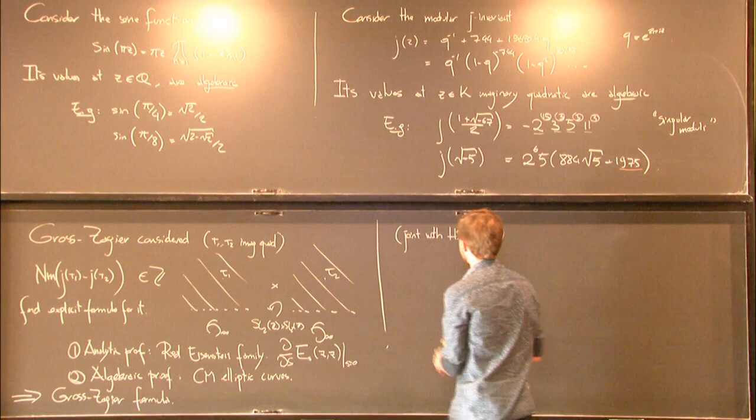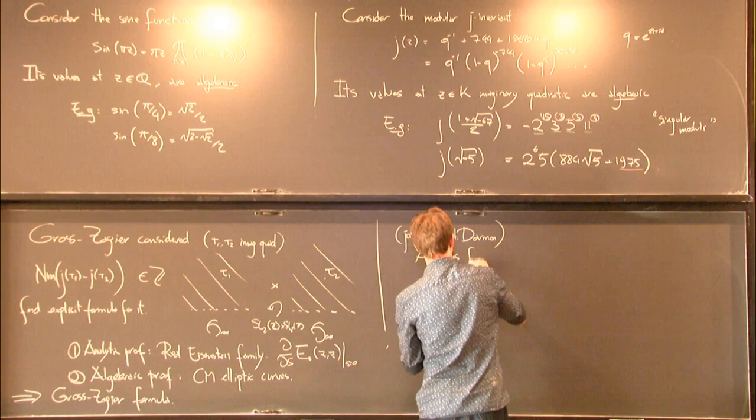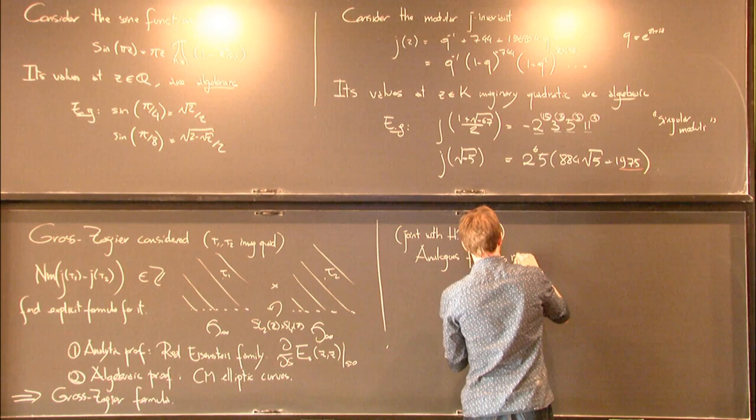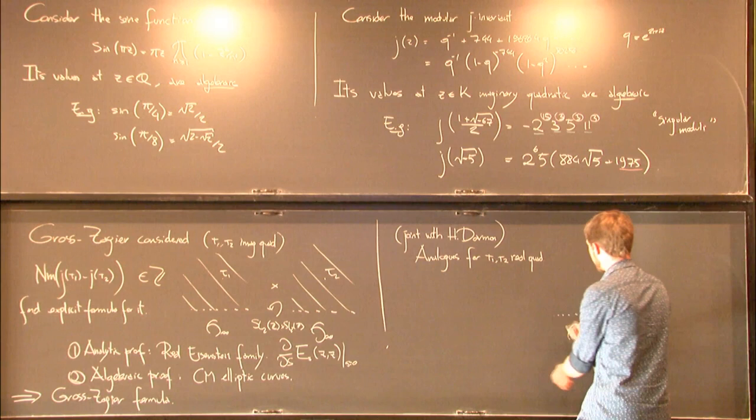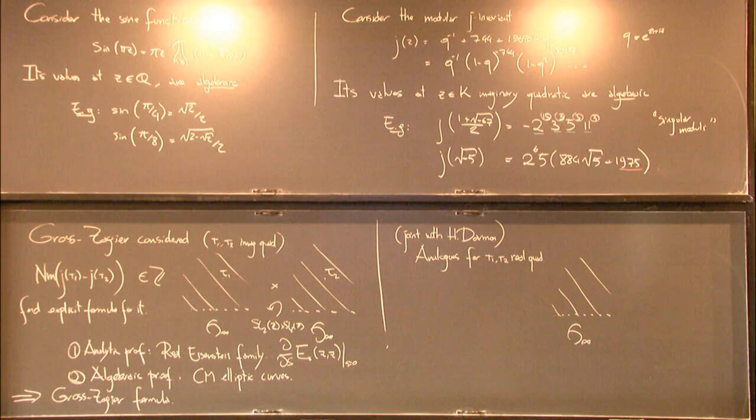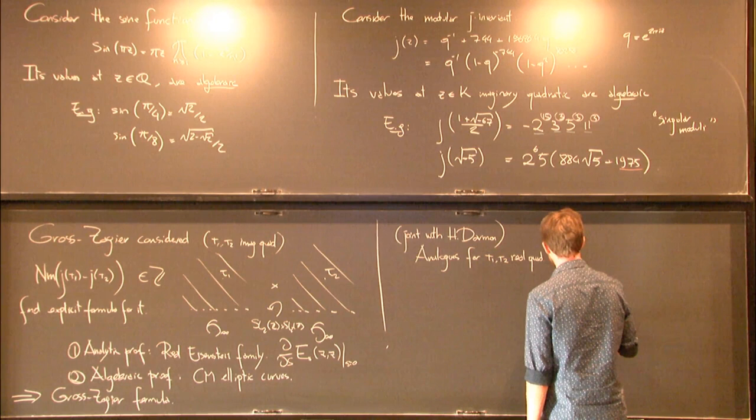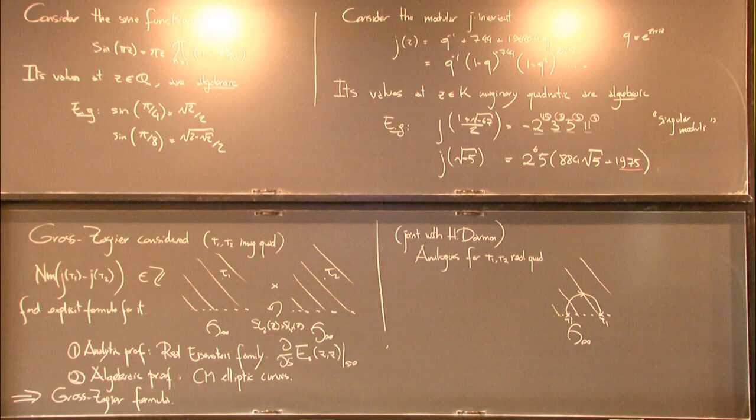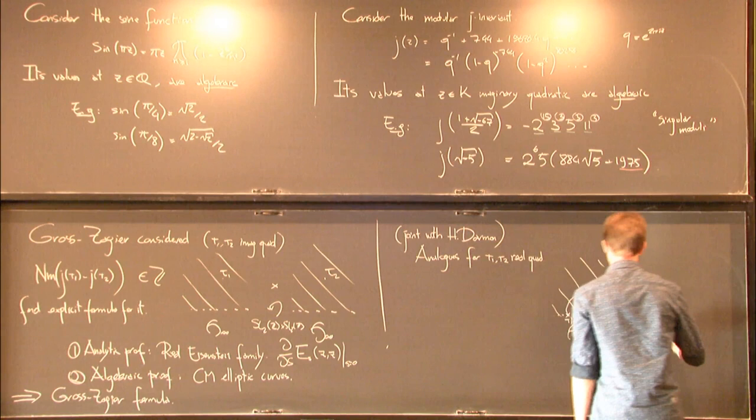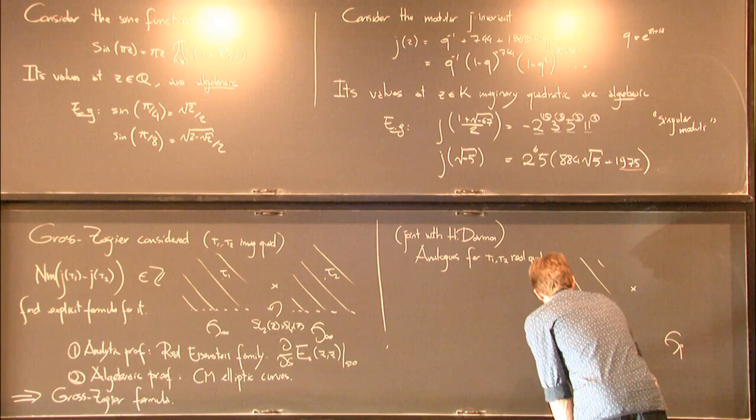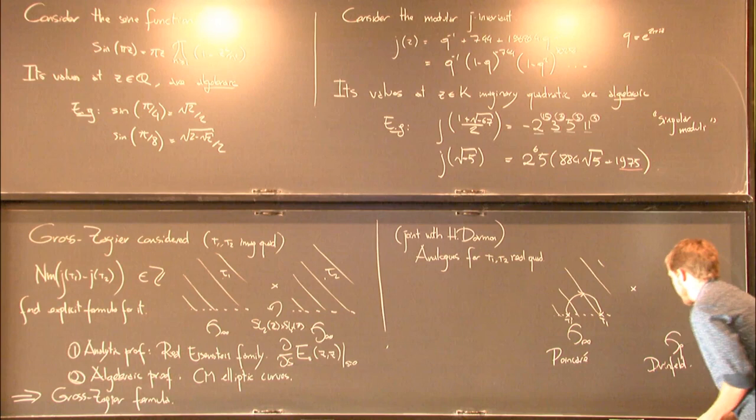This is joint work with Henri Darmon. What we do is we find analogs for, instead of imaginary quadratic things, we take real quadratic arguments. The trick that we use is we replace the second occurrence of the upper half plane by a suitable p-adic analog. This is usually called the Poincaré upper half plane, and this goes by the name of the Drinfeld upper half plane. There is a good analog for the usual upper half plane over the p-adics. It's much harder to draw a picture of, but if you force me to, I would probably draw something like this: this is a (p+1)-regular tree, and you should imagine the p-adic upper half plane as a sheet that sort of hangs around this tree.